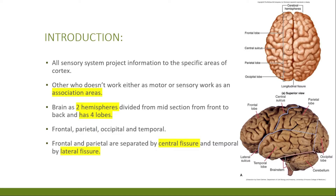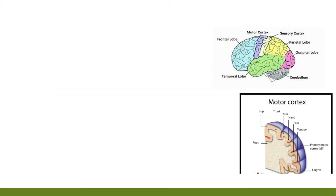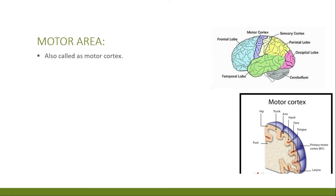The motor area, also called the motor cortex, is located in the frontal lobe and controls voluntary movements of the body — movements that are under conscious control.